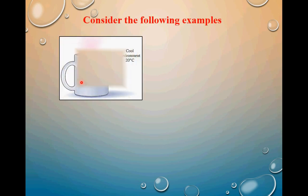Consider the first example. You have a hot cup of coffee maintained at 70 degree Celsius as your system, placed in a cool environment at 20 degree Celsius. Because of the higher temperature, the system has a higher amount of internal energy, since internal energy is a function of temperature. After some time, the coffee will reach the same temperature as the surrounding, 20 degree Celsius, meaning the internal energy of the system decreases — so energy has transferred from the system to the surrounding.